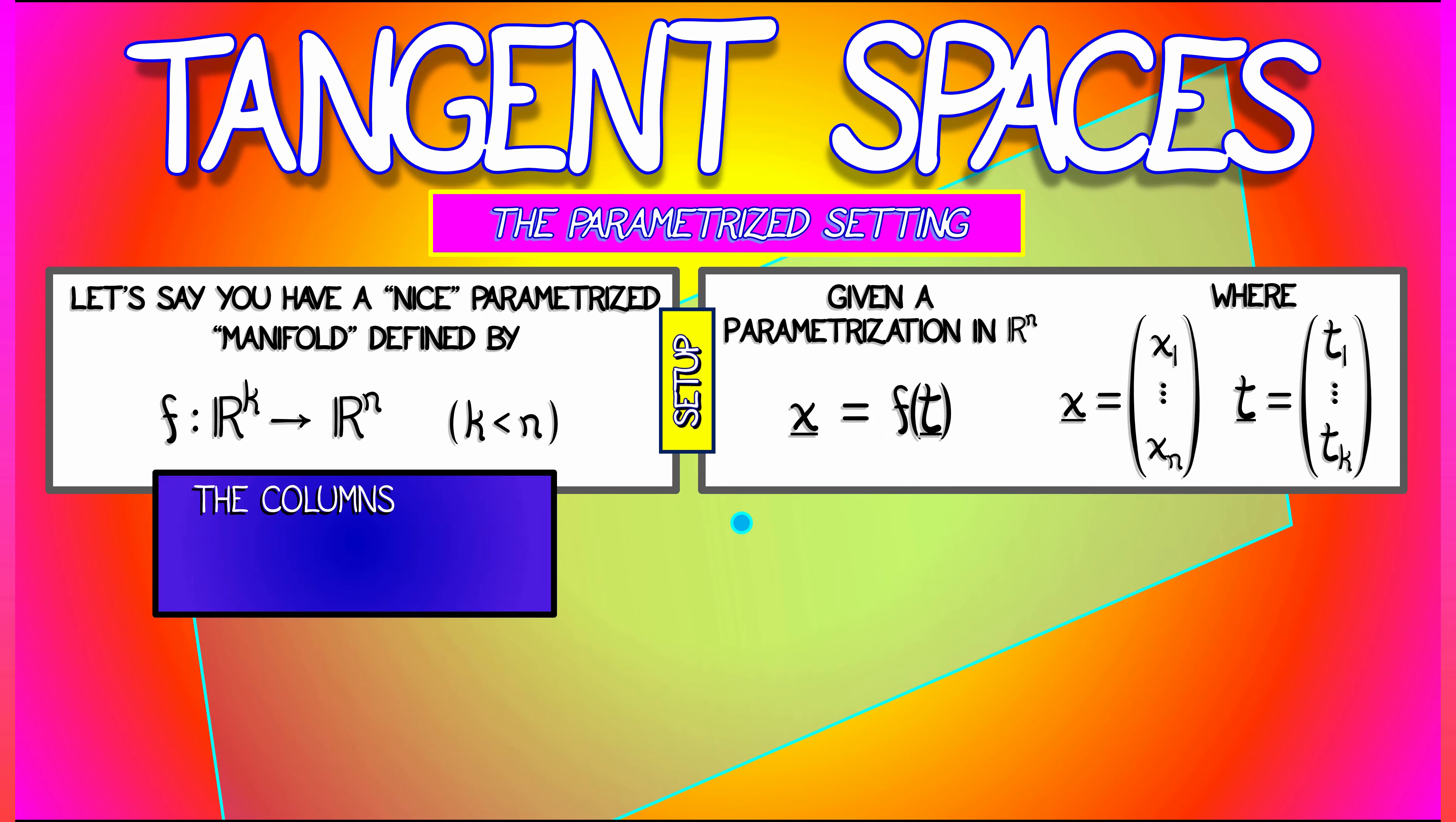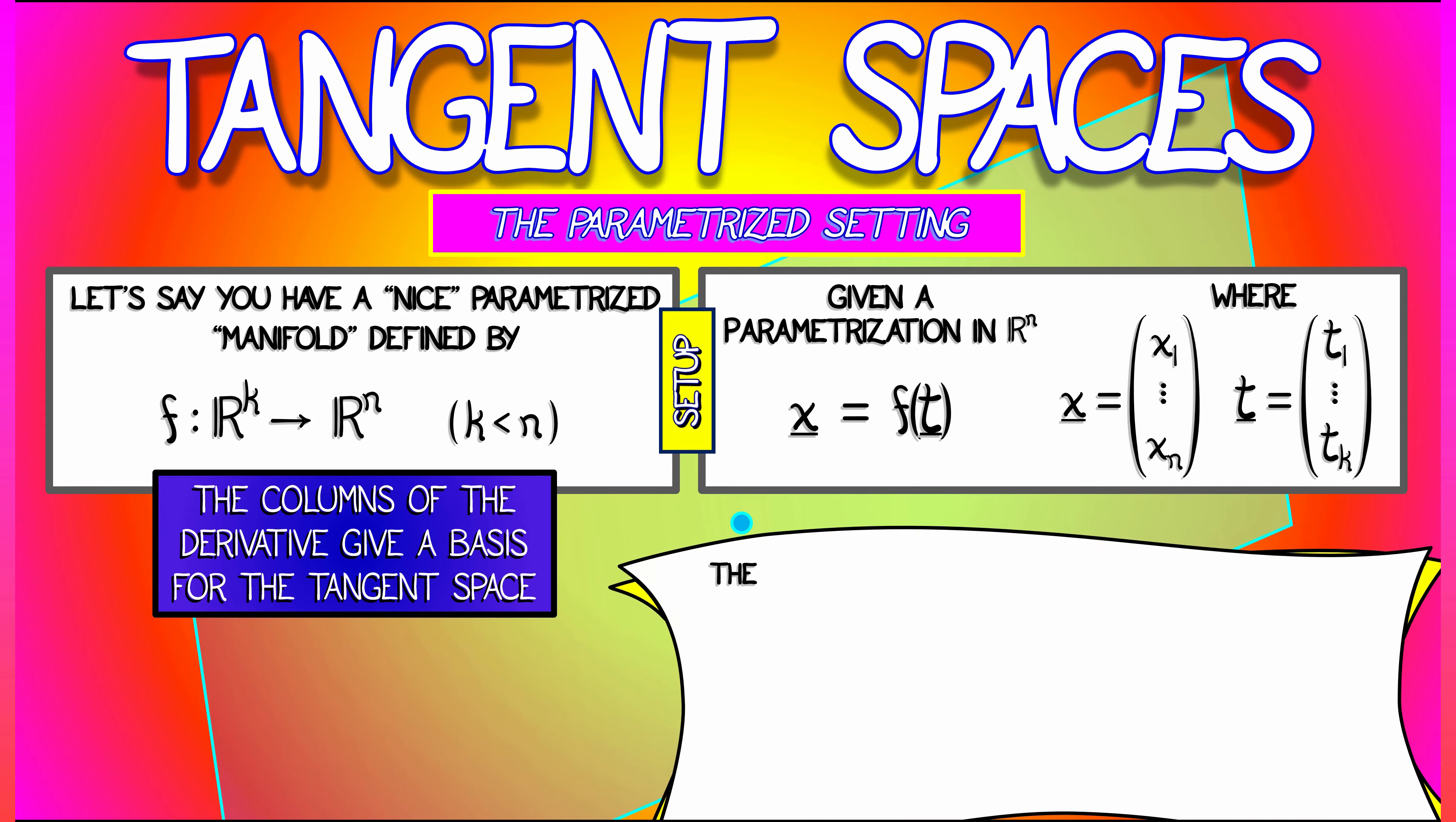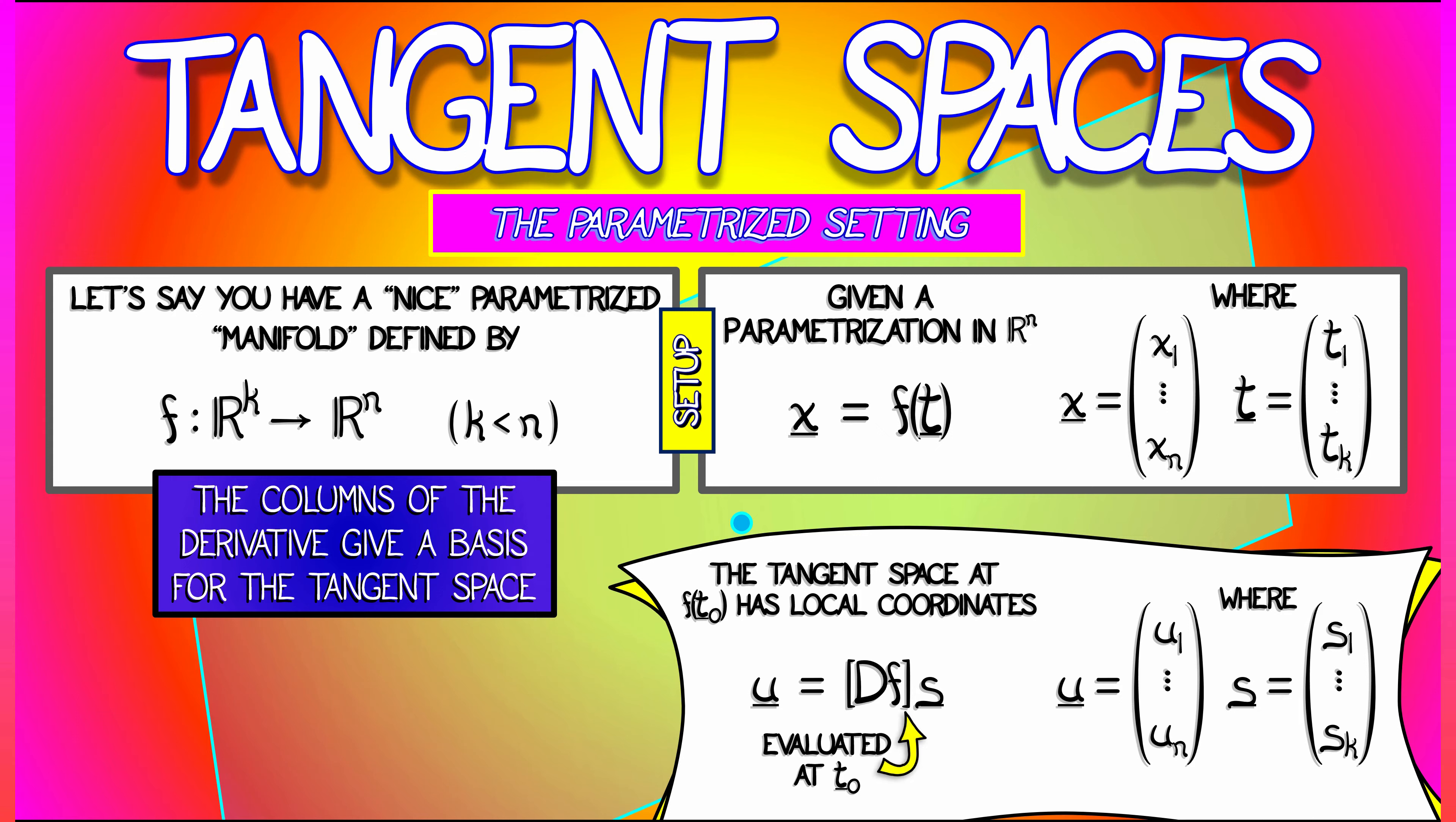the derivative gives you a parametrized space by using the columns as a basis. So if we set up local coordinates, U coordinates on our tangent space, then the tangent space is parametrized using the equation U equals the derivative of F times S, where now we have S as our parameters, S1 up through SK, we have K parameters.